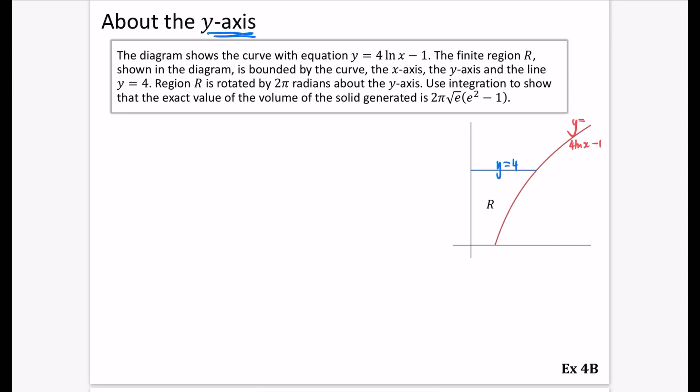So because we're going about the y-axis here, we know that our volume is going to be equal to pi of x squared dy. And we need to make sure that these limits are the y limits. So it's going to be rotated, and it's going between 0 and 4. So we need to do a bit of work here to find out what x squared is.